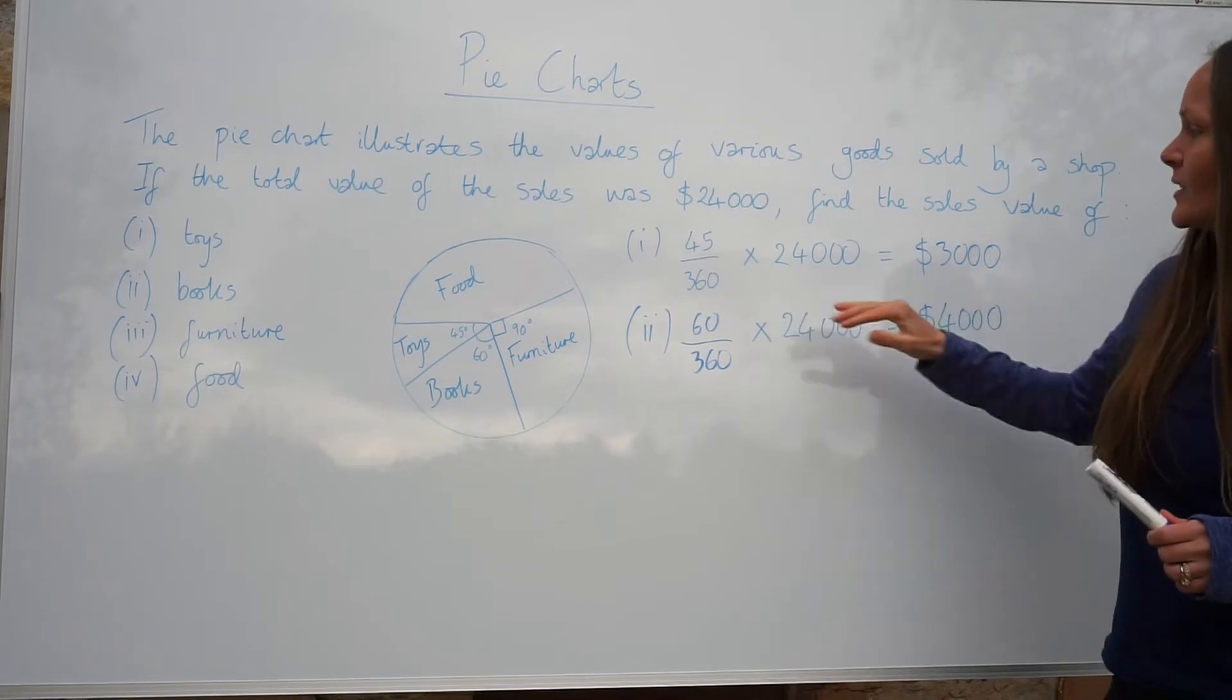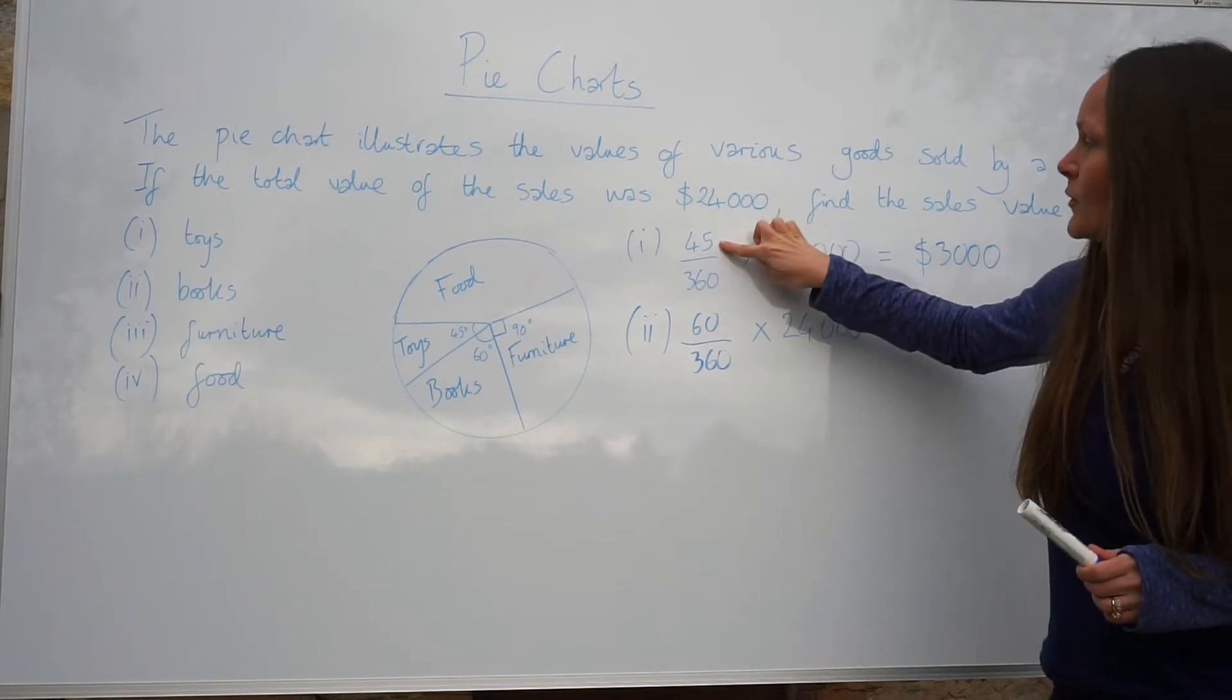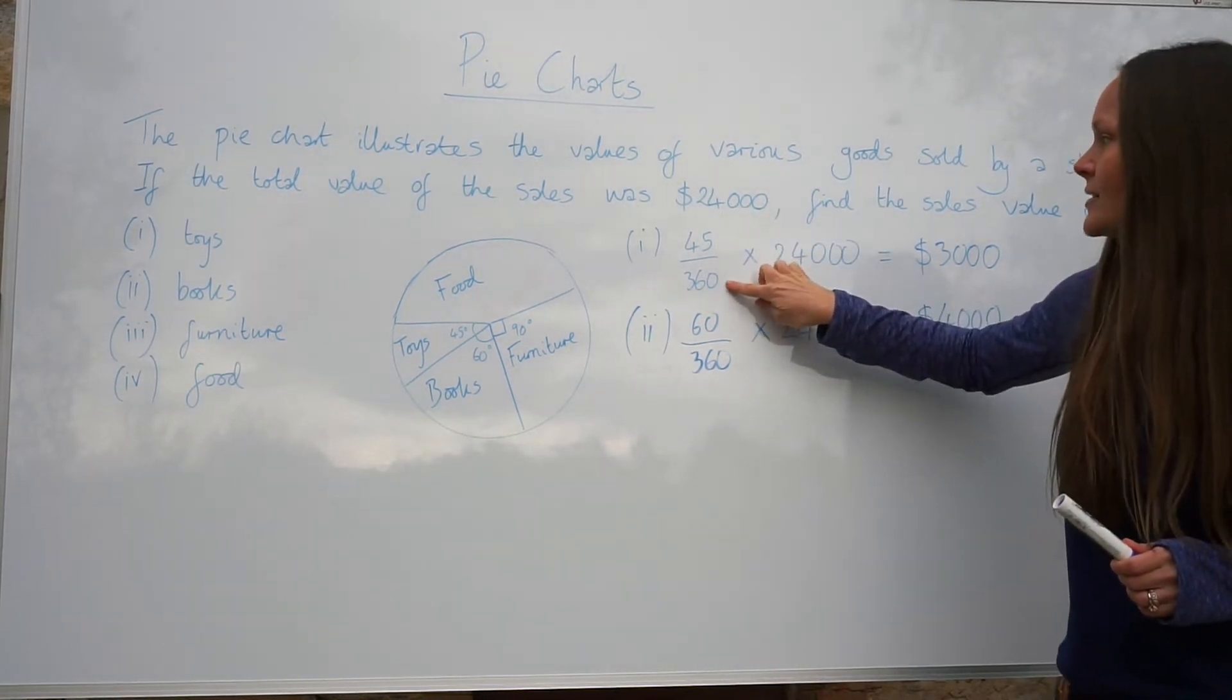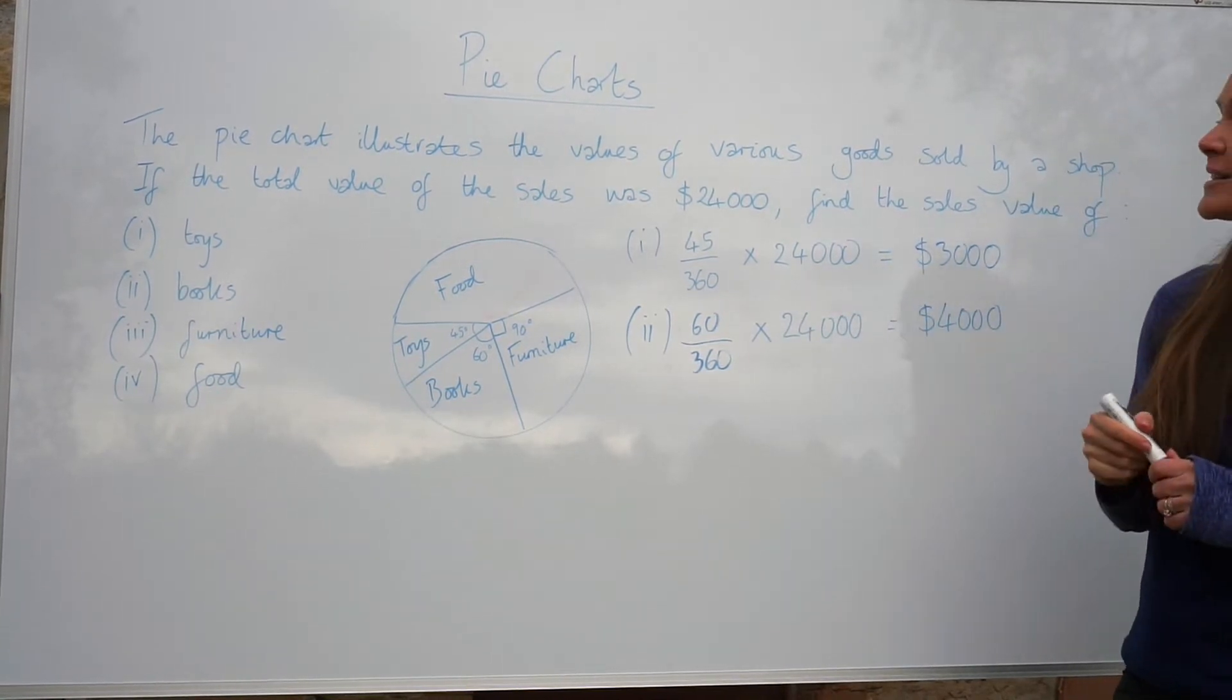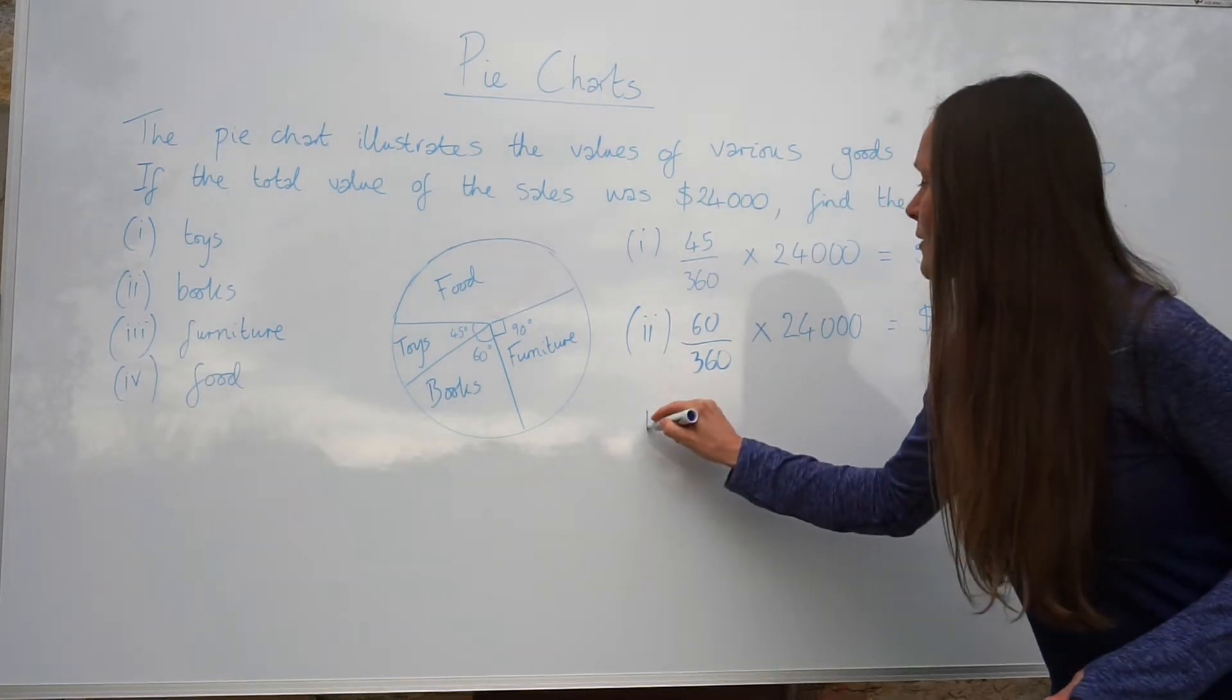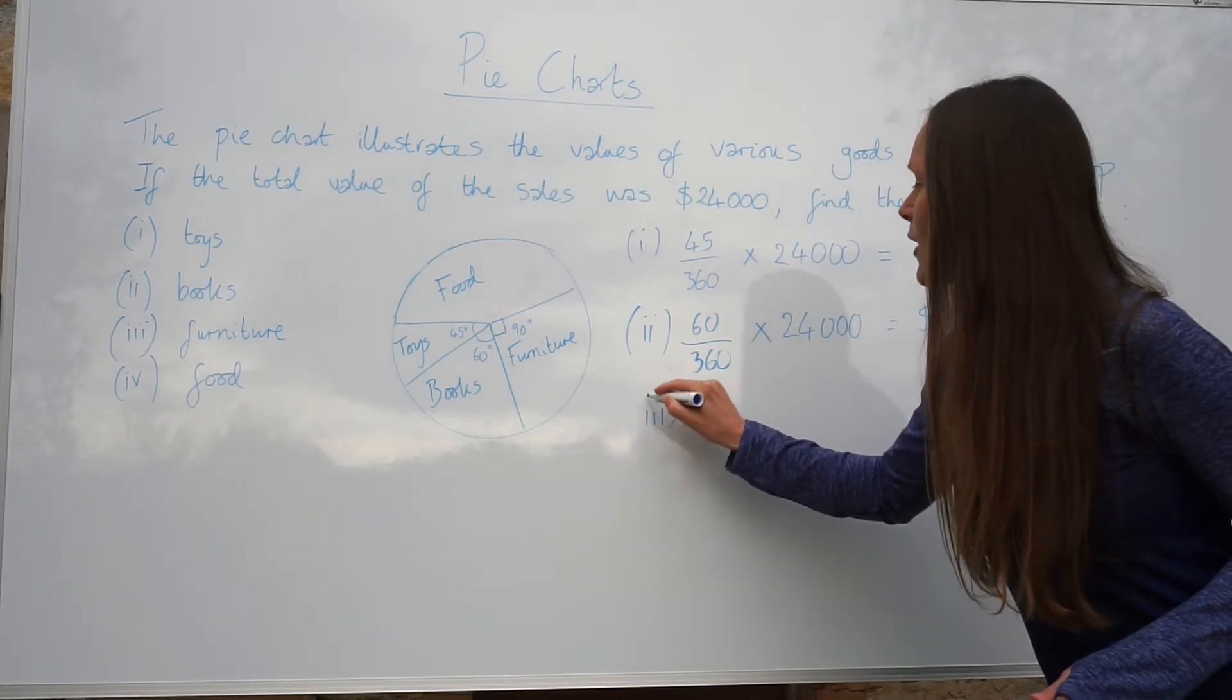So you can see it's quite straightforward. You just take the number of degrees, write it out of 360, and times by the total value. And you do that each time. So hopefully you can see what you need to do to work out the value made on furniture.